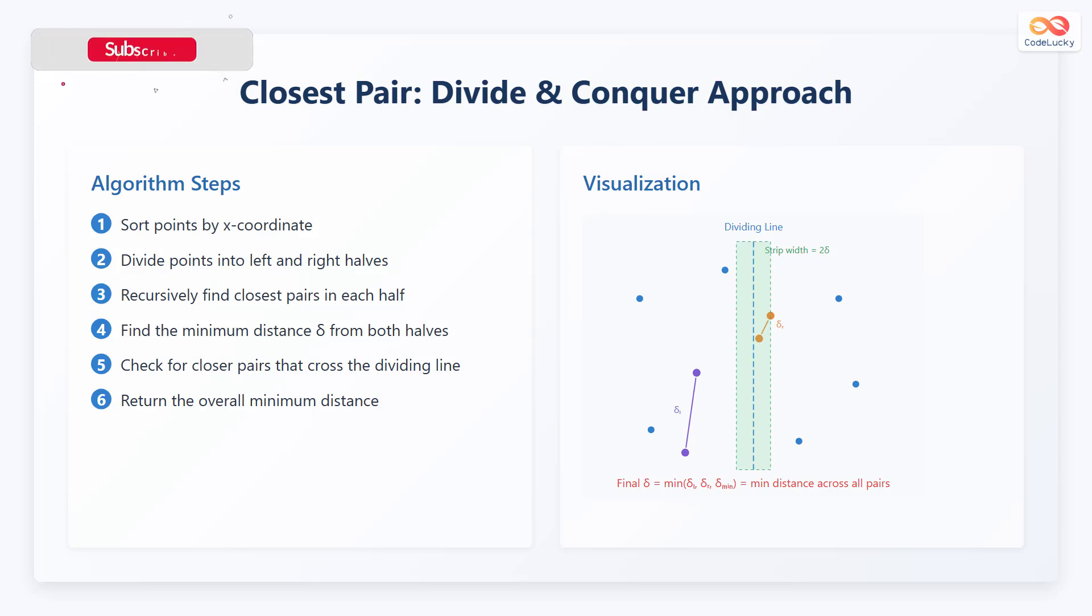Step 4, find the minimum distance delta from both halves. Step 5, check for closer pairs that cross the dividing line. Step 6, return the overall minimum distance.